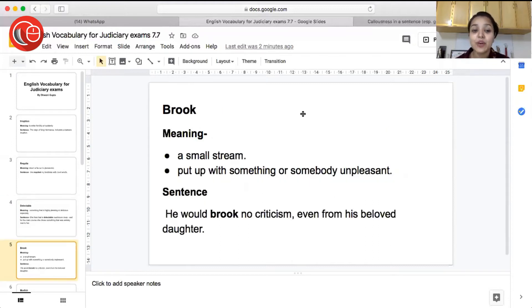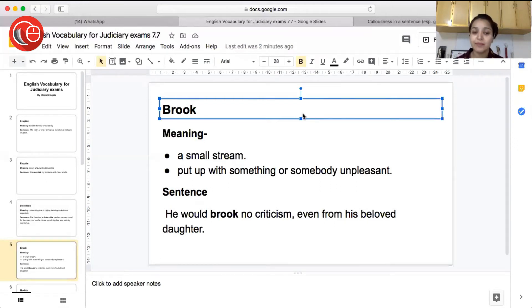So the next word is brook. Brook has got two meanings. First meaning is a small stream, very small stream. And the next is put up with something or somebody unpleasant. So you are just not saying anything and you are not complaining and just you are putting up with something or someone who's unpleasant. You're not liking it but still you're not complaining.